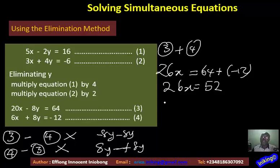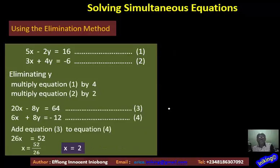So now we have 26X equal to 52. Add equation 3 to equation 4, and we have 26X equals to 52. And of course, our X will be equals to 52 divided by 26, and that gives you 2. So our X is equal to 2.